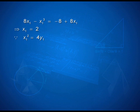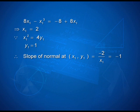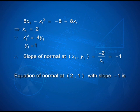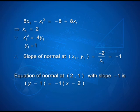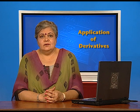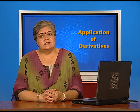Cross-multiplying and simplifying gives x₁ = 2. Using x₁² = 4y₁, I get y₁ = 1. Therefore, the point at which the normal is constructed has coordinates (2, 1), and the slope of the normal, −2/x₁, takes the value −1. With the point and the slope known, the equation of the normal is y − 1 = −1·(x − 2). Simplifying and expressing in standard form gives the equation of the normal as x + y = 3. With this we end today's lesson on tangents and normals. I hope this has helped to clarify some of your doubts.